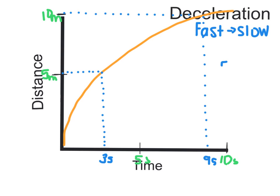So the first five meters, it only took three seconds. The second five meters, it took almost six seconds. So you can see the difference of going from fast to a slow speed. And that's deceleration.